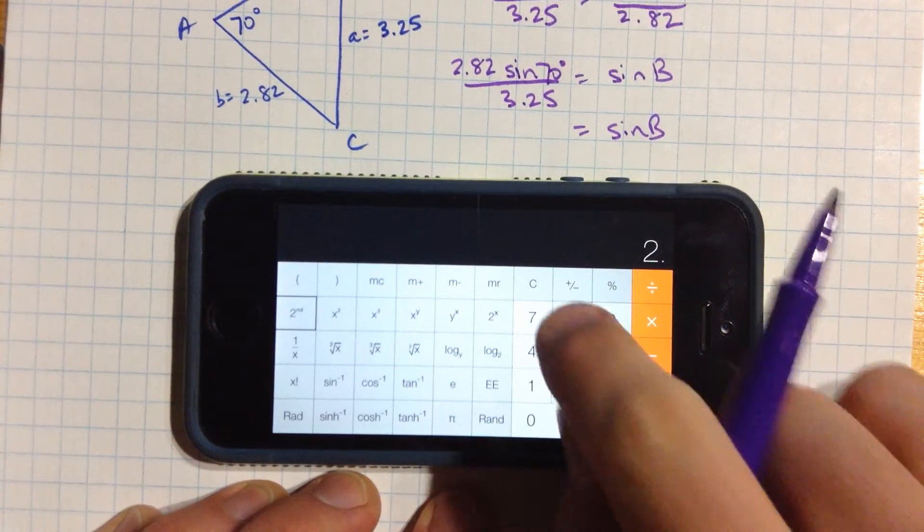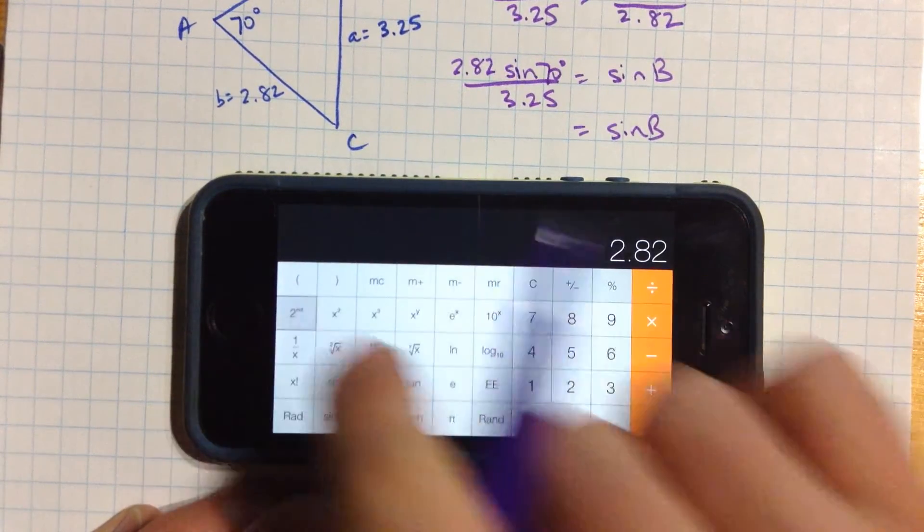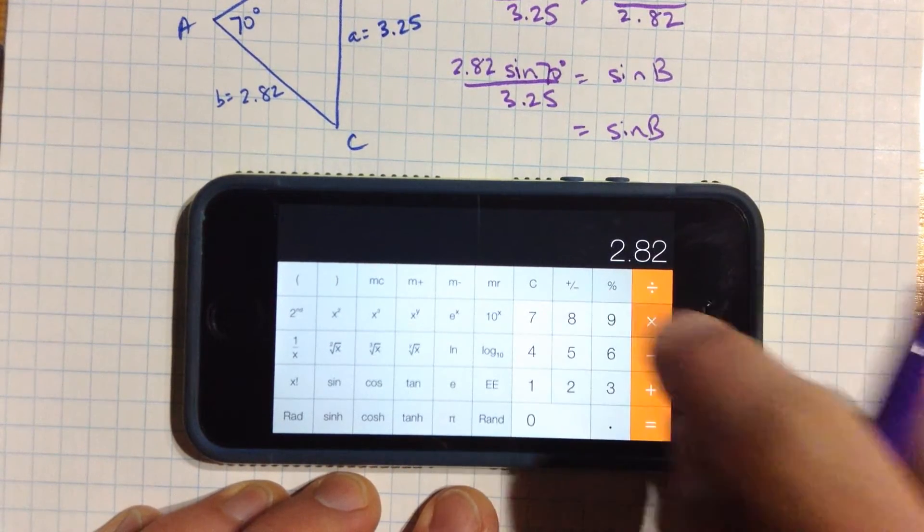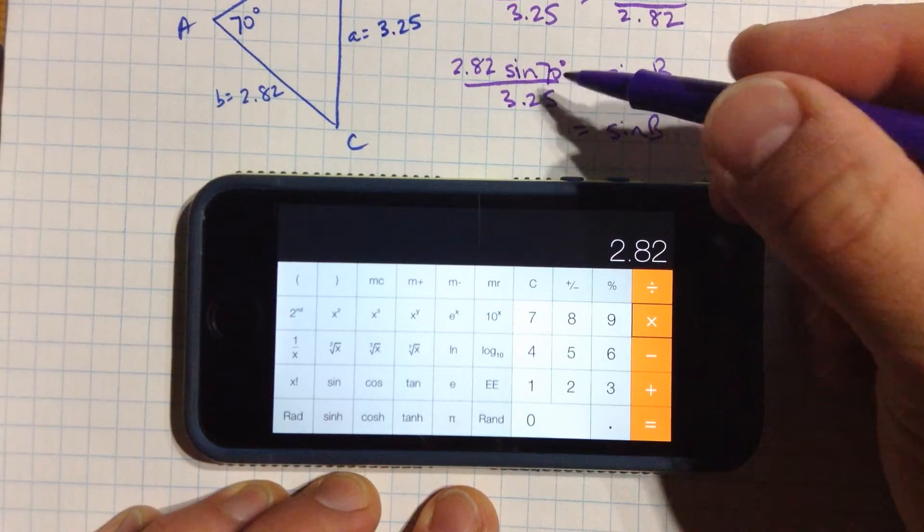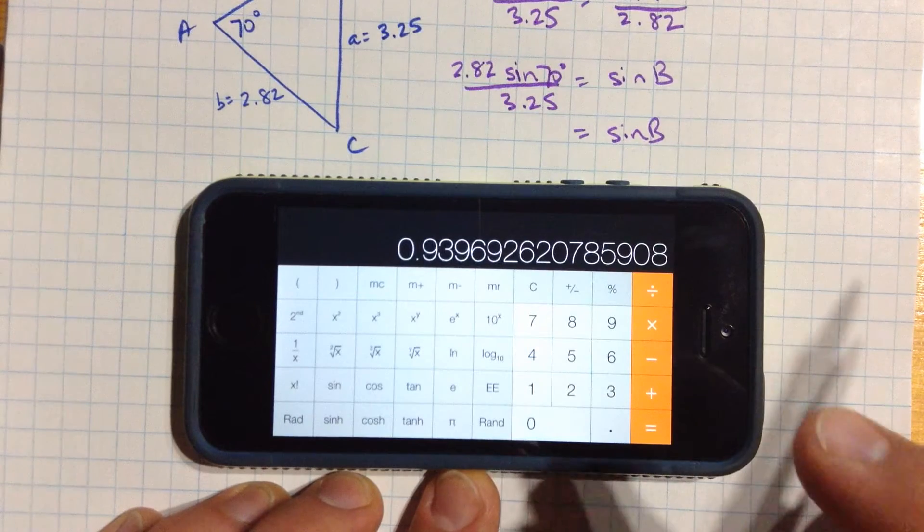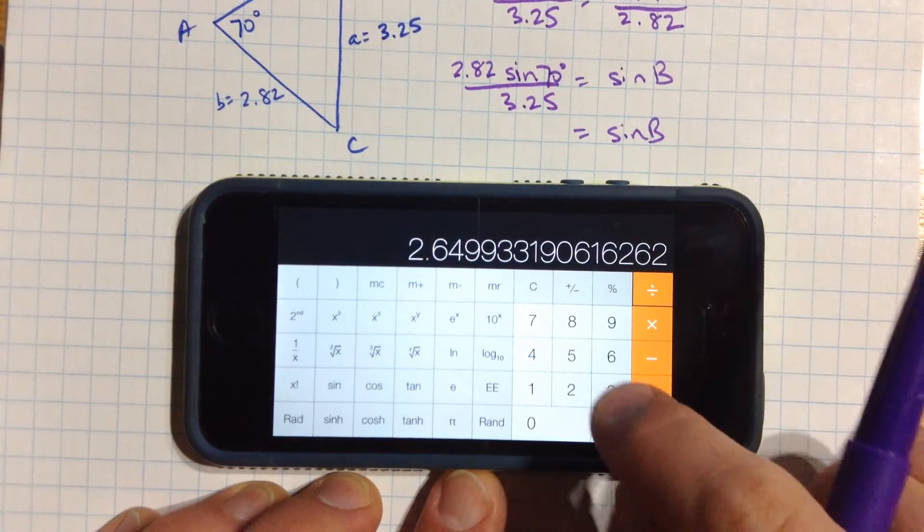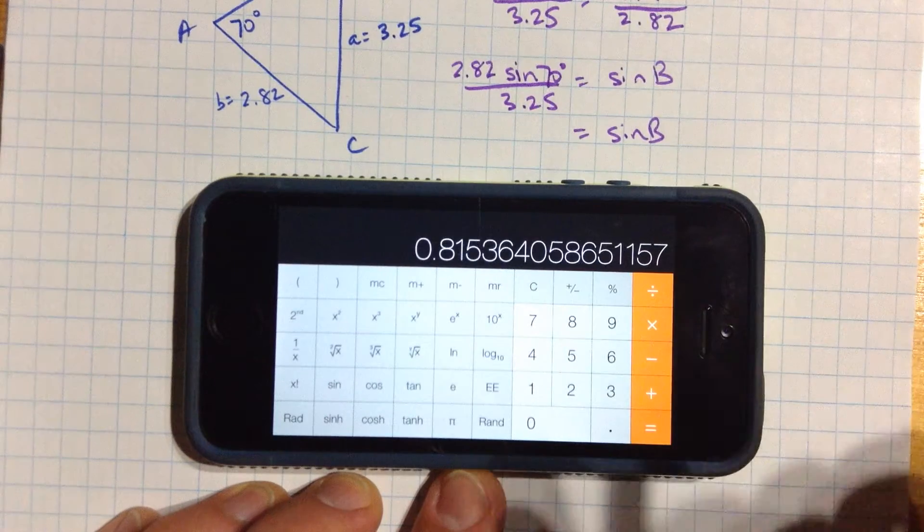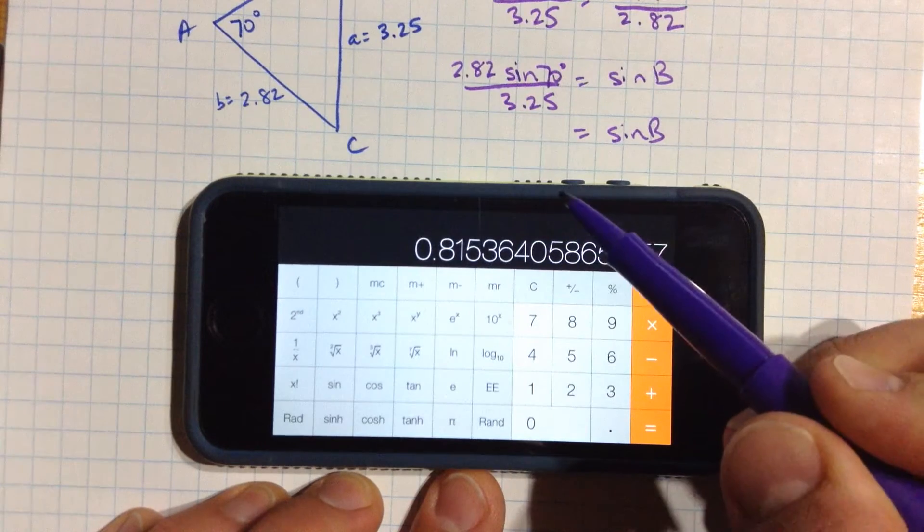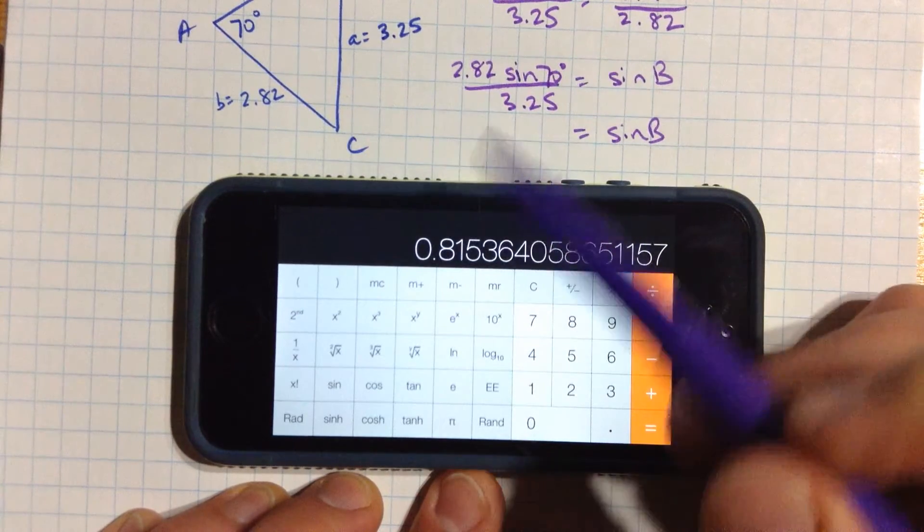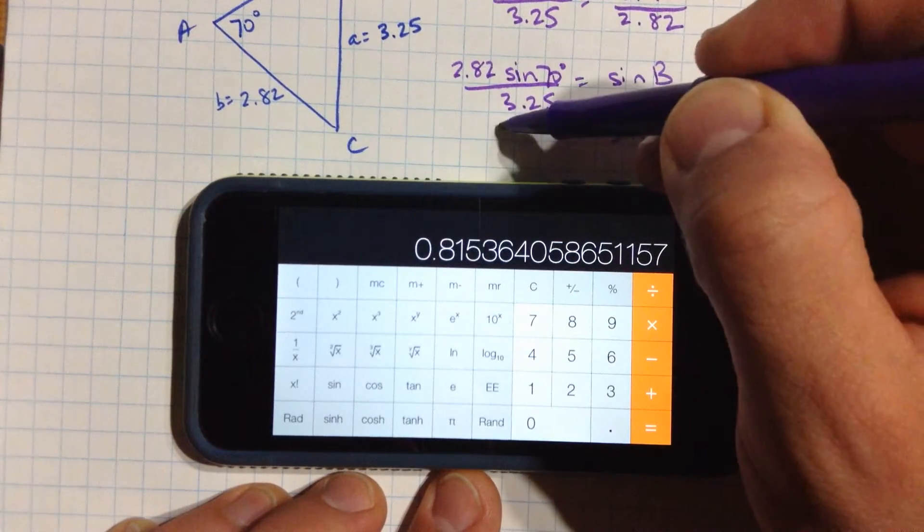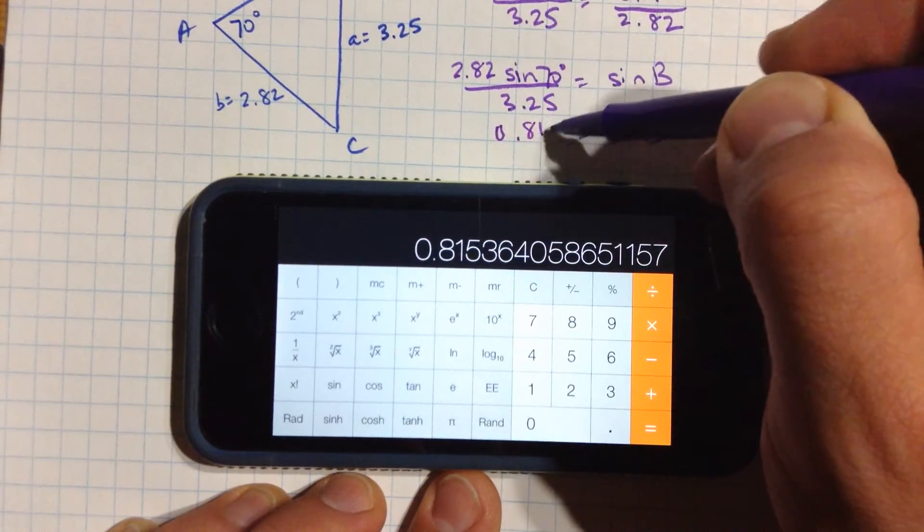I'm going to do 2.82 times sine of 70, on here I press 70 and then I press the sine key. Some calculators you do that in the other order. And now I'm going to divide by 3.25, and I get a number that should be less than 1, should be between negative 1 and positive 1 all the time with sine, and in particular here it's always going to be between 0 and positive 1. So this is approximately equal to 0.815.